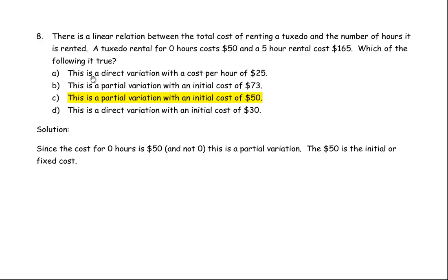Looking at the four answer choices, we are really asked: is it a direct variation or partial variation, and then depending on which it is, what is the cost per hour or the initial cost? Now the fact that 0 hours costs $50 tells you that there is a fixed amount, or a fixed cost, or an initial cost. So that means that it is a partial variation.